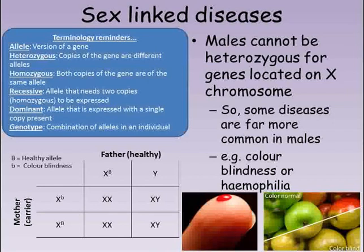Let's look at the inheritance of one of these diseases. If we have a healthy male and a female who is a carrier for colour blindness, the male is XY and the female is XX. On each of the X chromosomes is a gene that, when damaged, leads to colour blindness. If the male does not have colour blindness, his single copy of this gene must be the normal healthy allele. The female is a carrier, making her heterozygous, so she has one version of each allele.